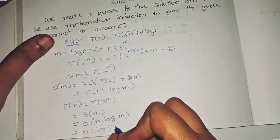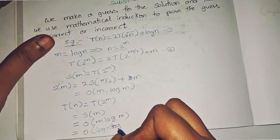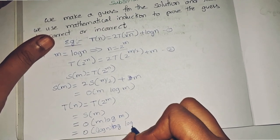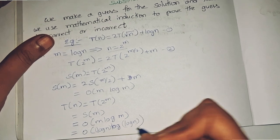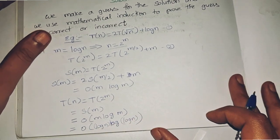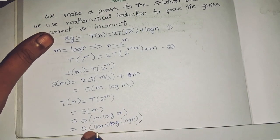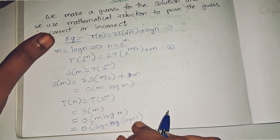...times log log n. So this is the time complexity here: T(n) = Big O of log n log log n. Actually this question is asked in the GATE examination.